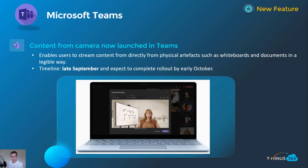Diving right into it, we'll start off with Microsoft Teams. This first one is related to Content from Camera, now launched into Teams. Essentially, this allows you to present from a camera view which can detect things like a whiteboard or maybe a document you're showing on your camera, and present that on top of the screen versus sharing your screen directly. This gives a bit more flexibility. It will be interesting to see what the quality and detection looks like from a whiteboard perspective. This will come out in late September and be complete by early October.